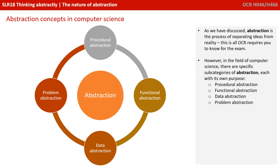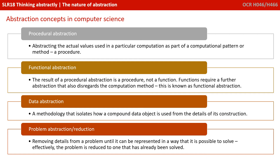We have procedural, functional, data and problem abstraction. Starting with procedural abstraction — this is abstracting the actual data values used in any particular given computation as part of a computational pattern or method, ending with a procedure. So instead of, for example, having 1 plus 2 equals 3, we'd now have A plus B equals C. That's a procedural abstraction.